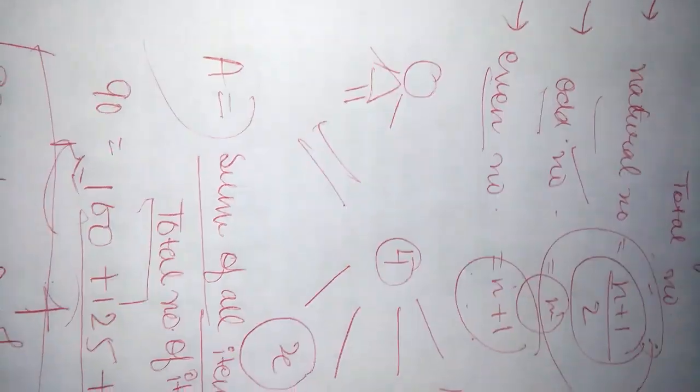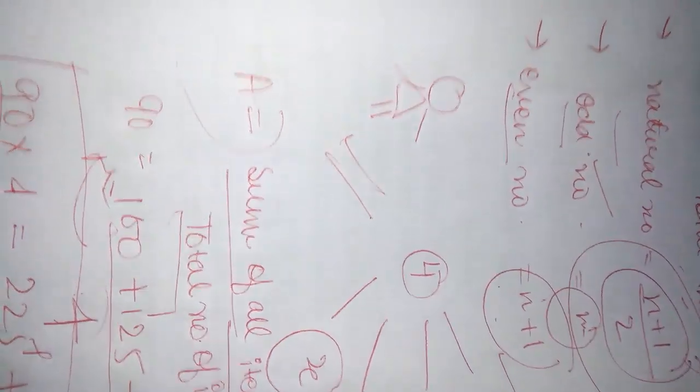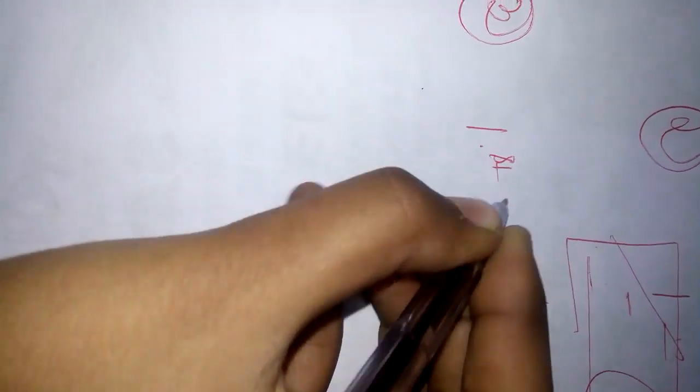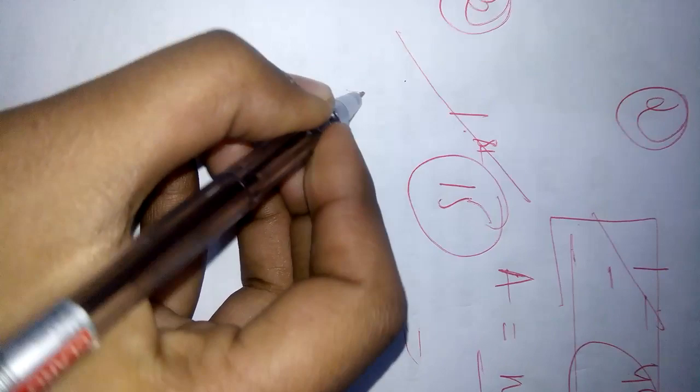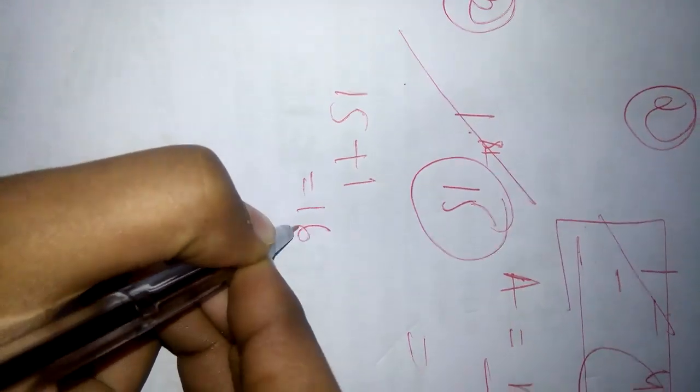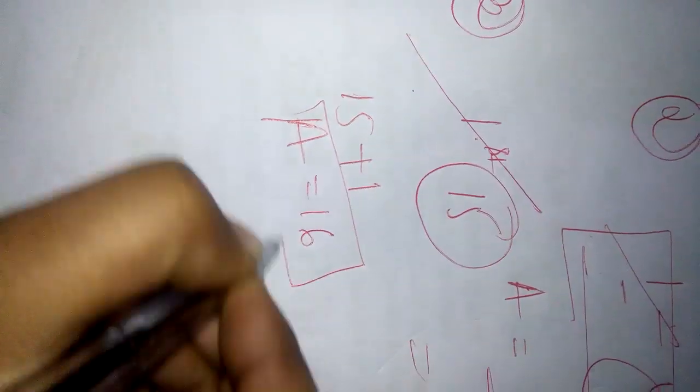So, here it is asking about first 15 numbers. So, we are using 15. 15 plus 1 is equals to 16. So, its average will be 16.